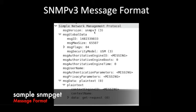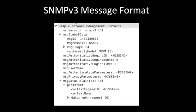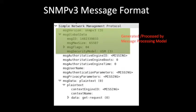Then we have message global data, which includes message ID, message max size, message flag, and message security model — specifically USM, the User Security Model. Then we have authoritative engine ID, authoritative engine boots, authoritative engine time, and message username. Finally we have message data.